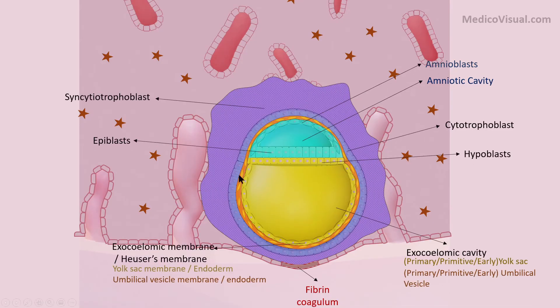During the mid of the second week, a new population of cells start arising between these two cavities and the cytotrophoblast, forming the extraembryonic mesoderm.